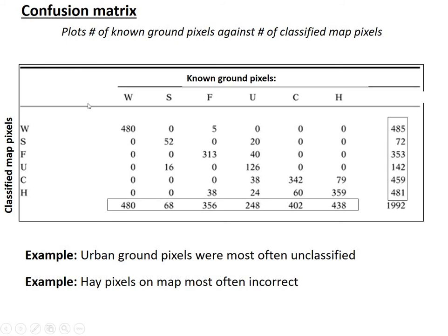Basically it's a table or a matrix. On the y-axis we have classified map pixels — so for example, water, sand, forest, urban, corn, and hay. These are how they appear on the map. And we have these same classes as we know they are on the ground: water, soil, forest, urban, corn, and hay. So if a pixel of forest that you know was forest on the ground was also categorized as forest on the map, then it goes right in here. In this example, most pixels were classified successfully — as you come down you see the biggest numbers where the classes meet.